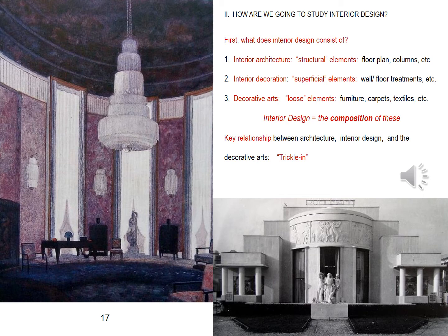Back to us in the here and now. How are we going to study interior design? First, we need to know what it consists of, and I've spelled that out for you on this page. Pretty straightforward. But I want to call your attention to the other two points. First, that interior design is a composition of these elements. The word composition itself is key, because that's what makes design, design. The overall space is composed, and we'll return to this important point again later in the semester.